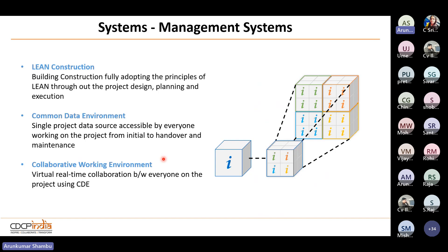Management systems — lean construction, common data environment, and collaborative working environments — bring their own rules and regulations. We need to honor them and create an interface ensuring data reaches them at the right time. This adds complexity, but all three systems ultimately help projects get realized faster, more accurately, and with minimized rework, duplication, and effort.